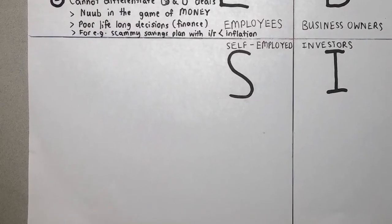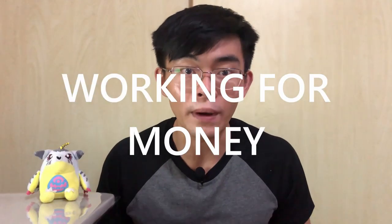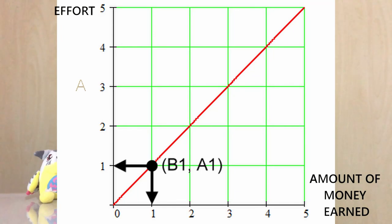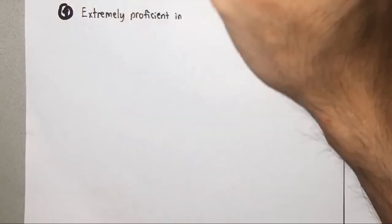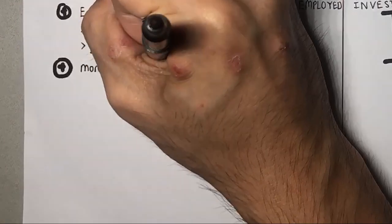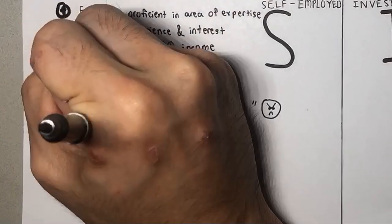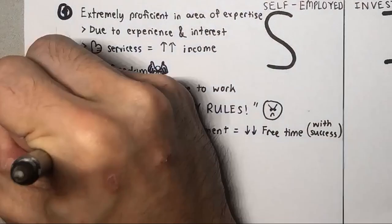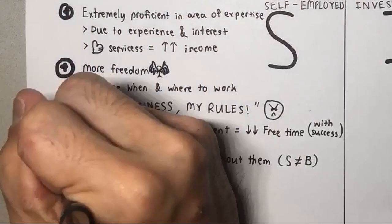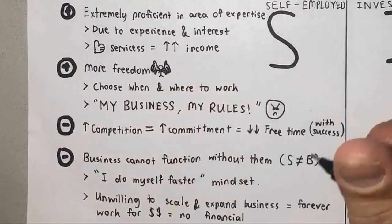Now let's move on to the S Quadrant, also known as self-employed. S's prioritize their freedom and improving their skills and expertise more than money. They strongly believe in working for money because the effort they put in is directly proportional to what they earn. However, it is extremely hard to succeed as an S, and sometimes being successful can be worse than failing as they use up all their time working even harder to maintain their success. Their business cannot function without them as they don't create systems like B's but instead are part of the system. In summary, S's will endlessly be working for money and will not pursue true financial freedom because they don't believe in expanding their business.